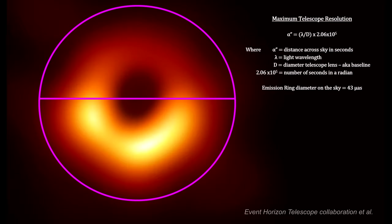The diameter of the M87 black hole emission ring, 54.8 million light years away, is 43 millionths of an arc second.